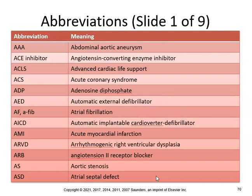Key abbreviations include: AAA — abdominal aortic aneurysm; ACE inhibitor — angiotensin converting enzyme inhibitor; ACLS — advanced cardiac life support; ACS — acute coronary syndrome; AED — automatic external defibrillator; AF/AFib — atrial fibrillation; AICD — automatic implantable cardioverter defibrillator; AMI — acute myocardial infarction; ARB — angiotensin 2 receptor blocker; AS — aortic stenosis; ASD — atrial septal defect.